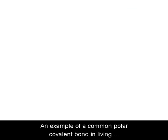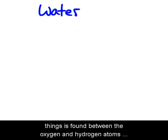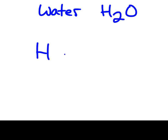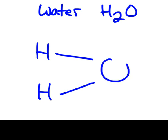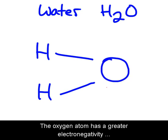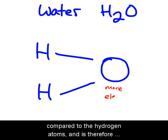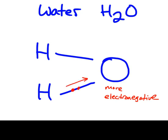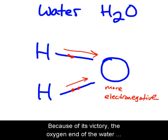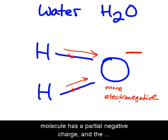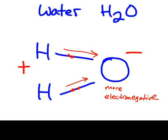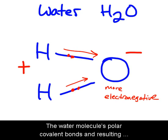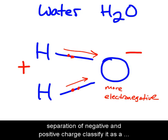An example of a common polar covalent bond in living things is found between the oxygen and hydrogen atoms in a water molecule. The oxygen atom has a greater electronegativity compared to the hydrogen atoms, and is therefore pulling harder on the shared electrons — ultimately winning the tug-of-war. Because of this, the oxygen end of the water molecule has a partial negative charge, and the hydrogen end has a partial positive charge. The water molecule's polar covalent bonds and resulting separation of charge classify it as a polar molecule.